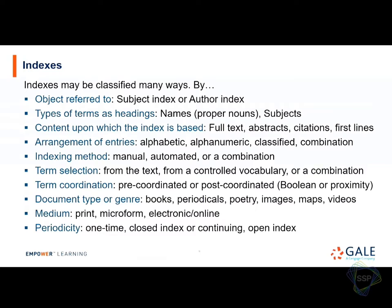Further in this document, there are many different ways to classify indexes. What's the object referred to — subject indexes or author indexes? The types of terms or headings — names or topics. What it's based on — full text, abstract, citations. The arrangement of entries — alphabetical is traditional, but you could have other ways. The indexing method — manual or automated, and we're going to talk about that in this session. Term selection: are the terms derived from the text, or from a controlled vocabulary externally, or some combination?